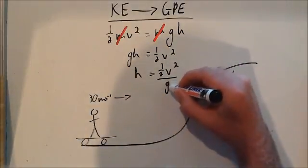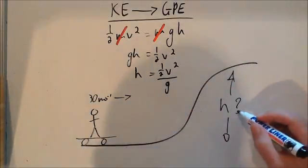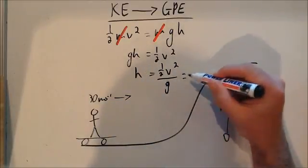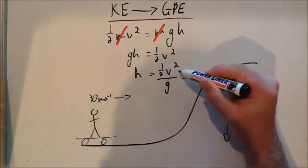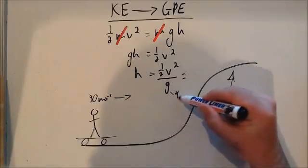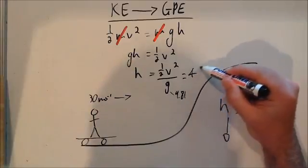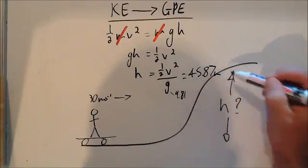So all we've done is rearrange the equation to make h the subject and this should be able to tell us how high it's going to go. So if you take half of 30 squared and divide it by g, which is 9.81, you'll find out the answer, the height that you'll get to is 45.87 metres.